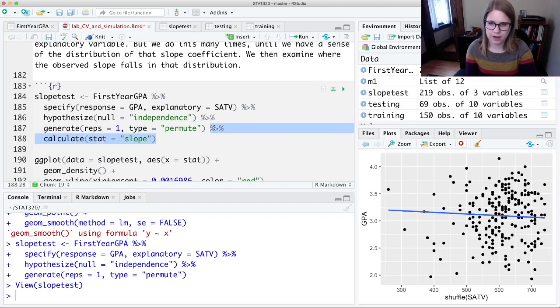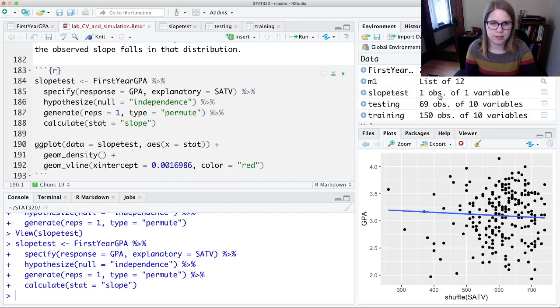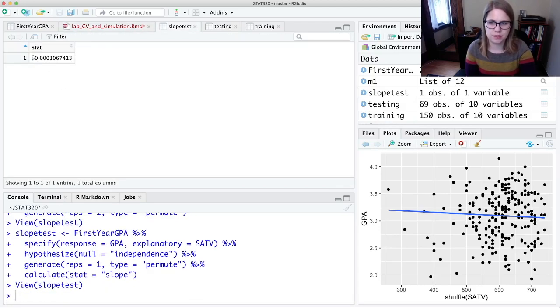And let's just put back this calculate stat equal slope. If I did this for one permutation sample, then I would just get a single observation. So this is the slope of the relationship between those two simulated variables.